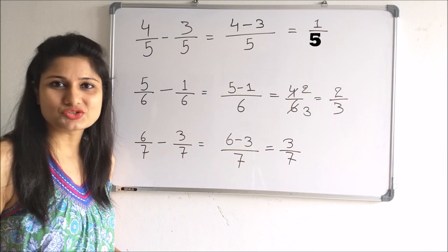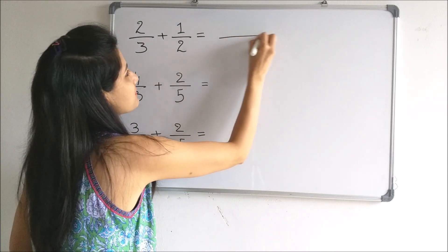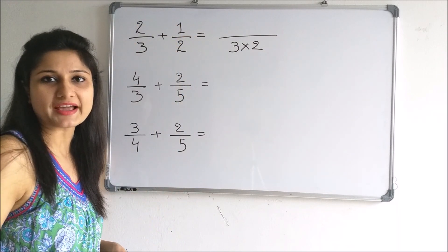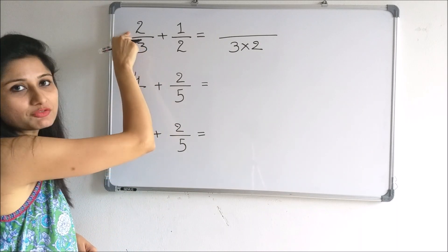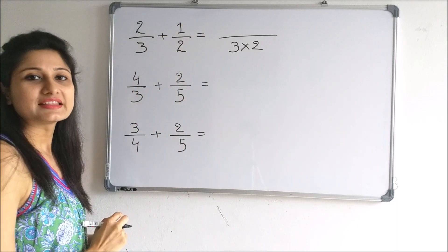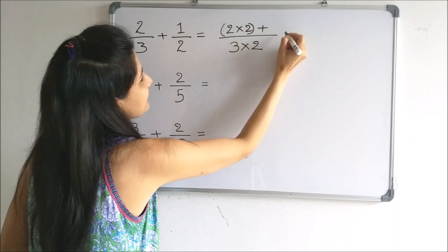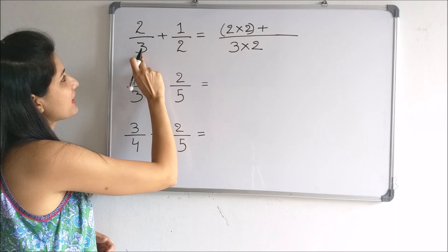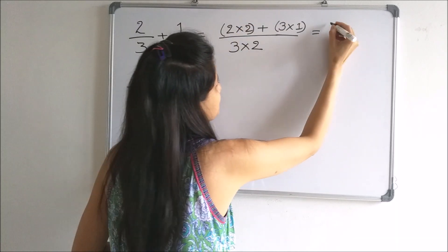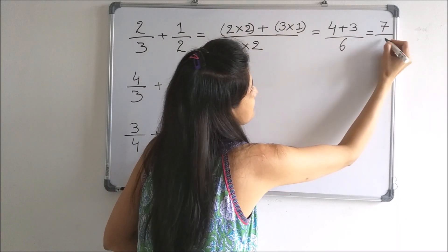Now let us take a few examples of case 2. In these examples, the denominators of the fractions are different. In such cases, we simply multiply the denominators and write here. Then we do the cross multiplication of the numerators and denominators of the two fractions — that is, we multiply the numerator of the first fraction with the denominator of the second fraction, and the denominator of the first fraction with the numerator of the second fraction, then add the two products. We multiply 2 and 2, put a plus sign because we are adding, then multiply 3 and 1. This gives us 4 plus 3 divided by 6, and our final answer is 7 by 6.